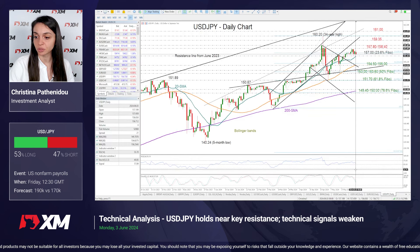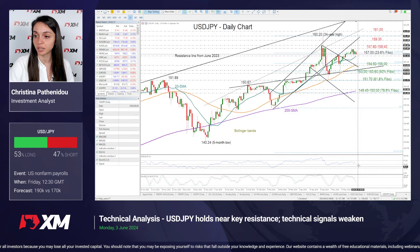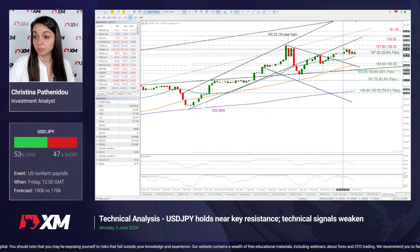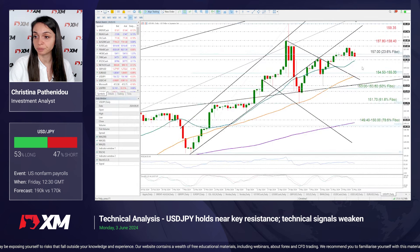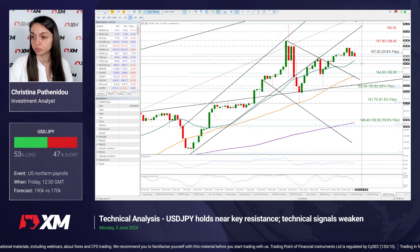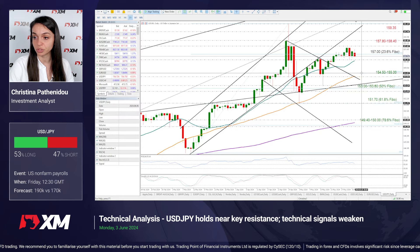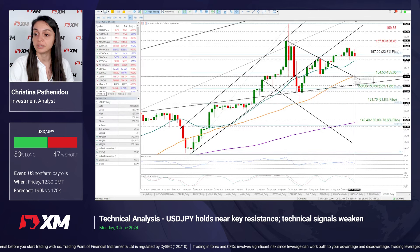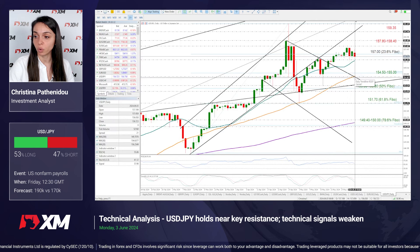That suggests that a downside correction might be more likely than an upside one, especially after the creation of this bearish engulfing candlestick pattern. So if the data disappoint, we may see a negative correction — probably a break below the 20-day moving average and the 156.35 territory, which could confirm additional losses towards the 154.15 territory, where this broken descending trend line and the 50-day simple moving average are both placed.